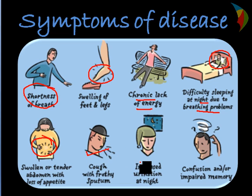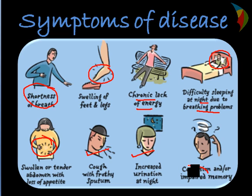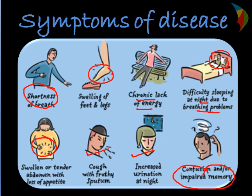Other symptoms include coughing, frequent urination, and not being able to remember things properly, which gives rise to impaired memory. So all these are symptoms of disease. This was all about health and disease. In the next session we are going to cover the types and causes of diseases.